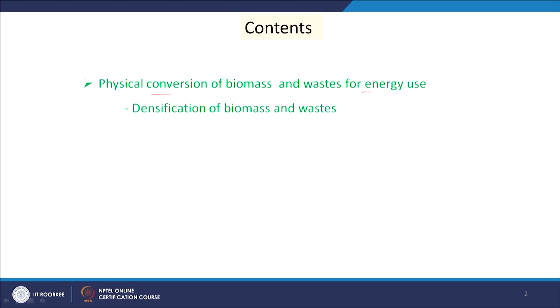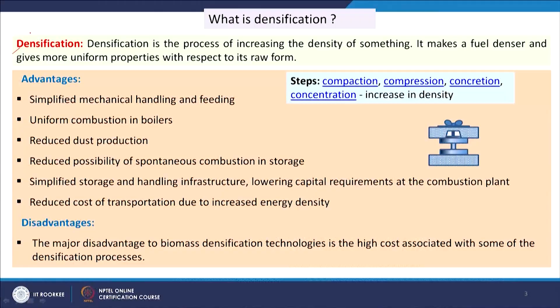The content of this class is the physical conversion of bio-mass and waste for energy use, with focus on densification of bio-mass and waste. Our objective is to densify bio-mass and waste to give certain strength and properties more desirable for applications in energy production by this feedstock. The densification mechanisms include compaction, compression, and concreation.